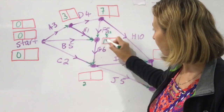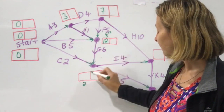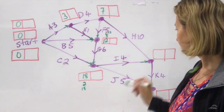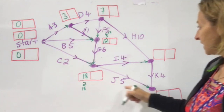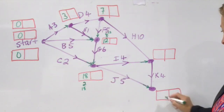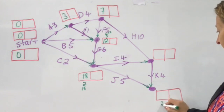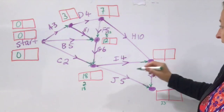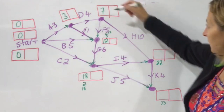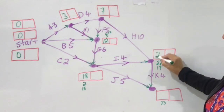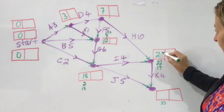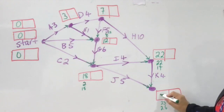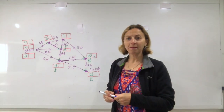The biggest option is twelve. Twelve plus six is 18, so my biggest option there is 18. Then 18 plus five is 23. There are two routes coming in there, so I have to be careful: 18 plus 4 is 22, and 7 plus 10 is 17. I'm looking for the biggest, which is 22. Then 22 plus 4 is 26, so that's 26.